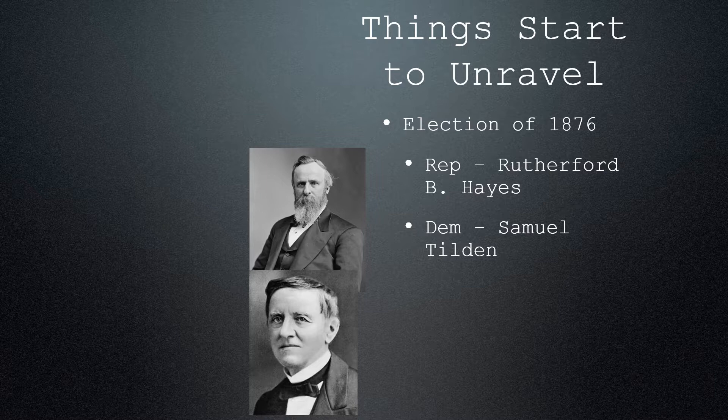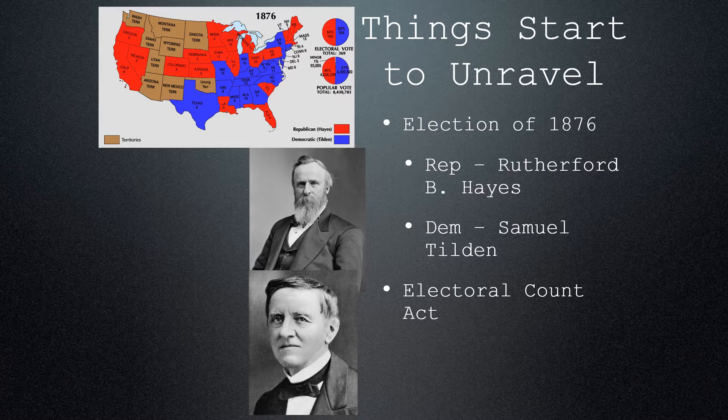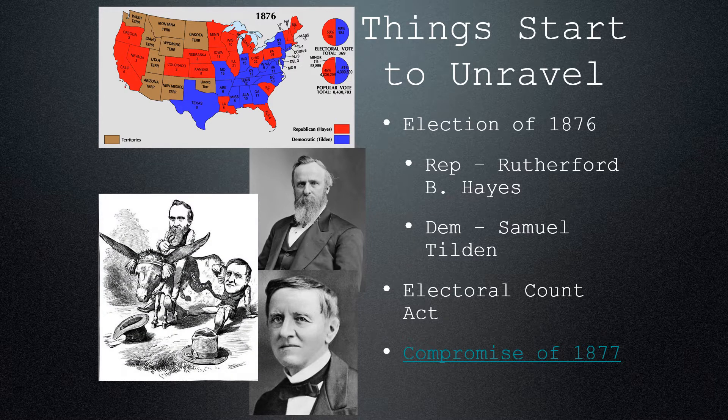So Congress passes a new law called the Electoral Count Act. This law is passed in early 1877, just a couple months after the election of 1876. It set up a commission consisting of 15 men selected from the Senate, the House, and the Supreme Court. Eight Republicans and seven Democrats voted to accept the Republican returns, which meant the Republican returns were the ones that would be counted. Democrats vowed to fight it, and they struck a deal — the Compromise of 1877.